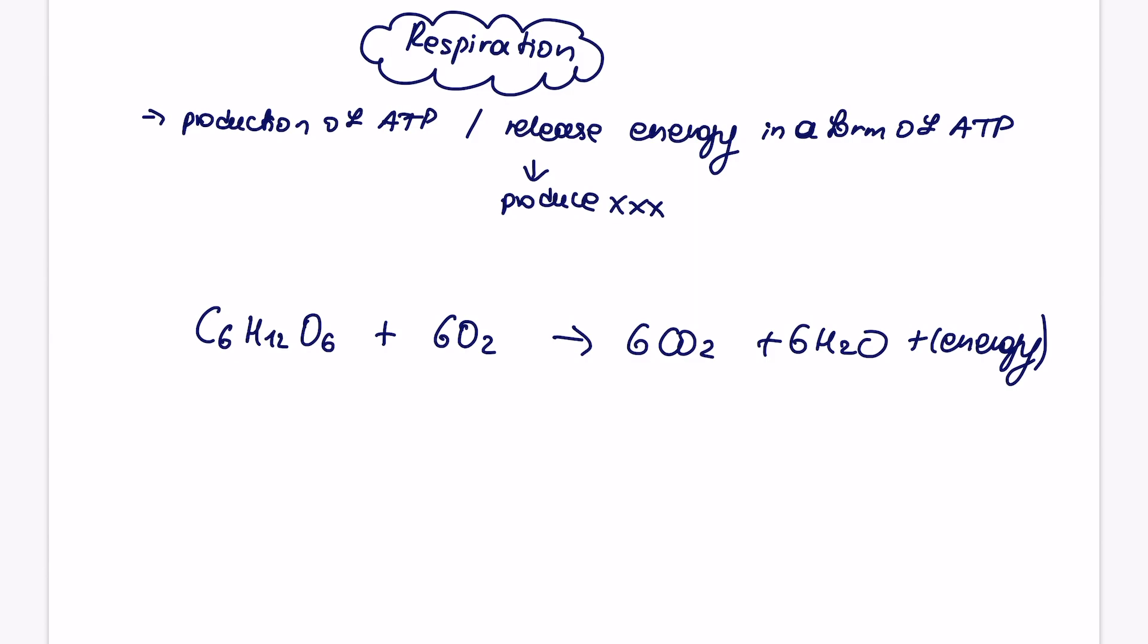So basically copy this over. C6H12O6 plus 6O2 goes to 6CO2 and 6H2O, and in brackets you can put energy, and the word equation is just below here.